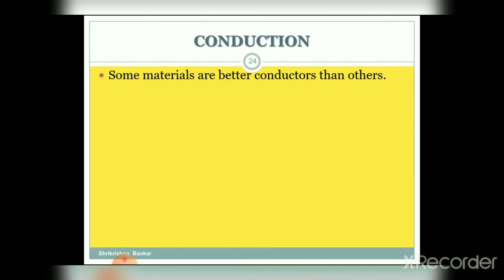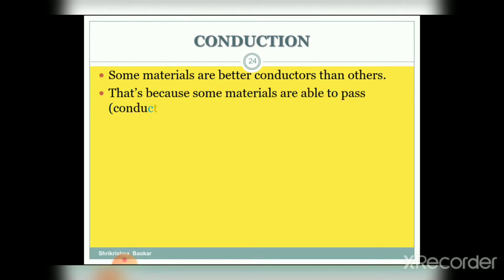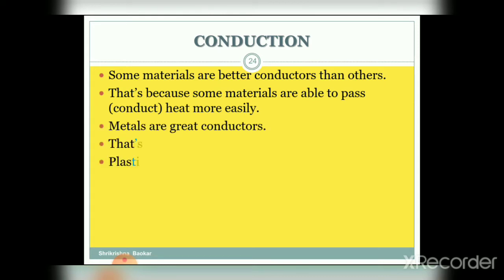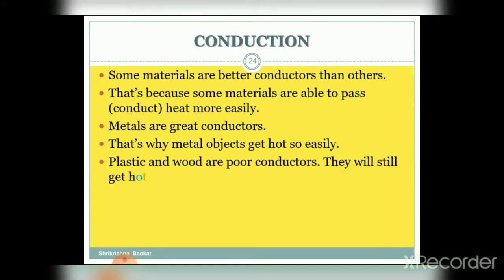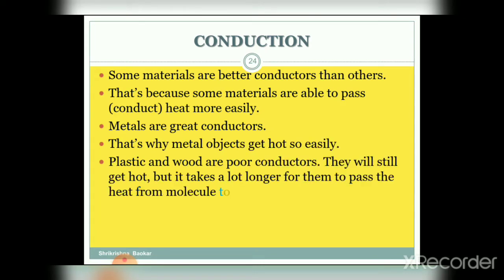Some materials are better conductors than others because some materials can conduct heat more easily. Metals are great conductors — that's why metal objects get hot so easily. Plastic and wood are poor conductors; they will still get hot but it takes much longer for them to pass the heat from molecule to molecule.